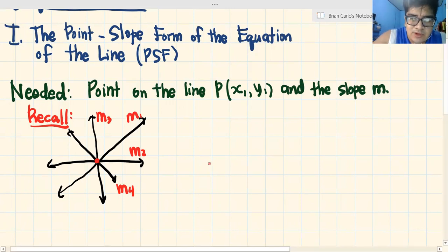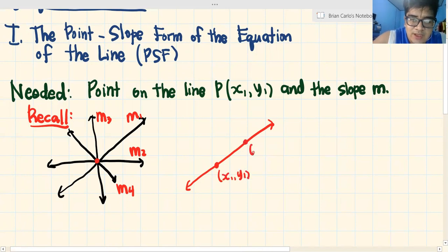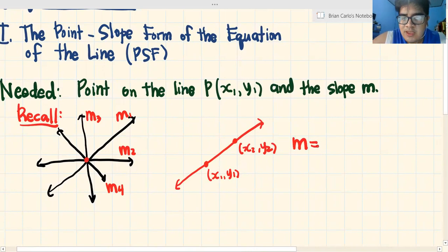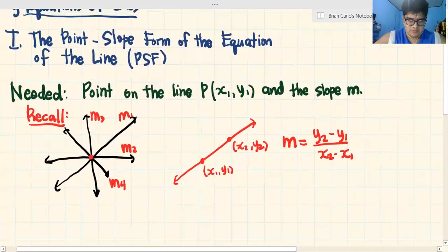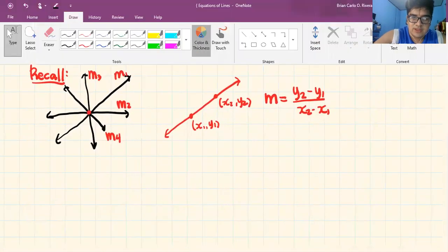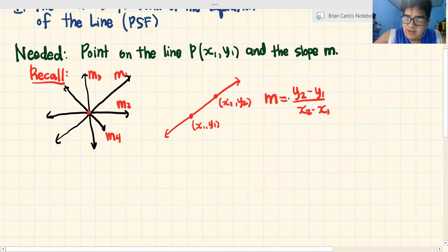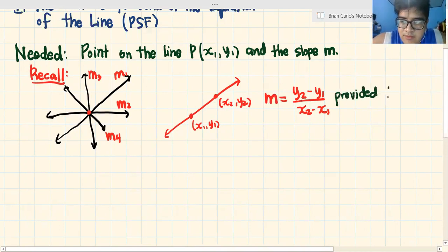Paano ba natin ginagawa yan? Let's say mayroon tayong line. This is the point, let's say, x1, y1. And this is x2, y2. Kukunin natin yung slope. Paano yung pinocompute yung slope? Given this line, mayroon dalawang points, and we can compute the slope by the formula y2 minus y1 over x2 minus x1. Yan ay isang magandang recall. Given two points and we have a line, we can compute the slope na y2 minus y1 over x2 minus x1, provided that x2 is not equal to x1 — para di maging zero in denominator, kasi pag naging zero in denominator, undefined yan.